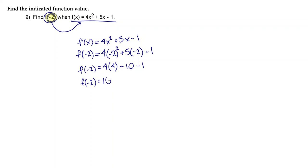4 times 4 is 16. Negative 10 minus 1 is negative 11. 16 minus 11 is 5. Therefore our answer is 5.